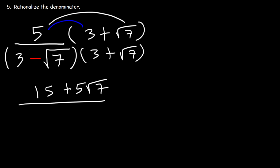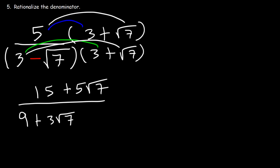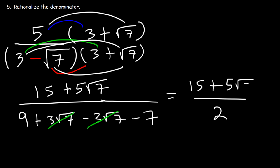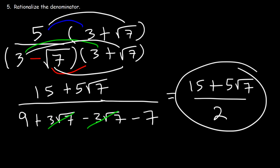On the bottom, let's FOIL. 3 times 3 is 9. Then we have 3 times root 7. Next, negative root 7 times 3. And the square root of 7 times the square root of 7 is the square root of 49, which is 7. The two middle terms will cancel — 3 and negative 3 adds up to 0. On the bottom, 9 minus 7 is 2. So the final answer is 15 plus 5 root 7 divided by 2.